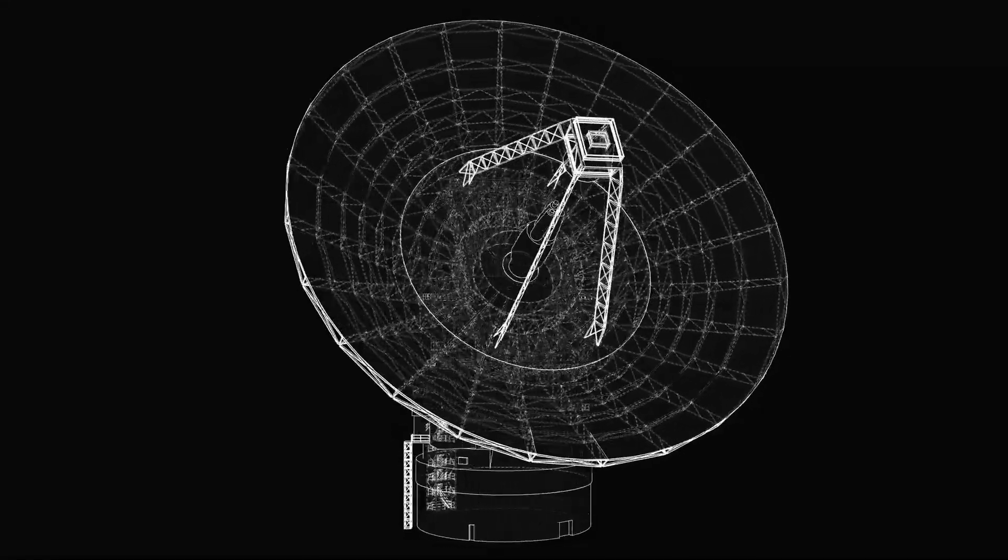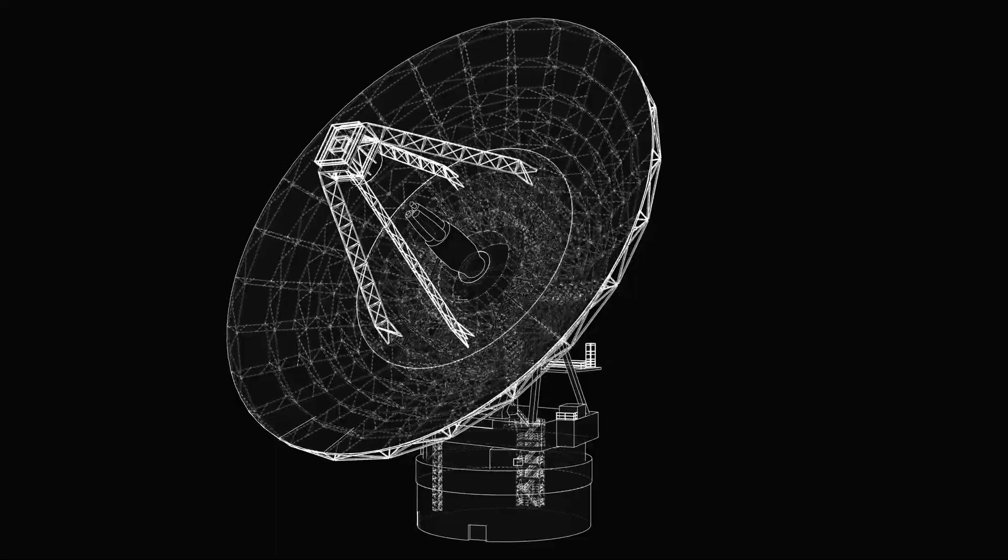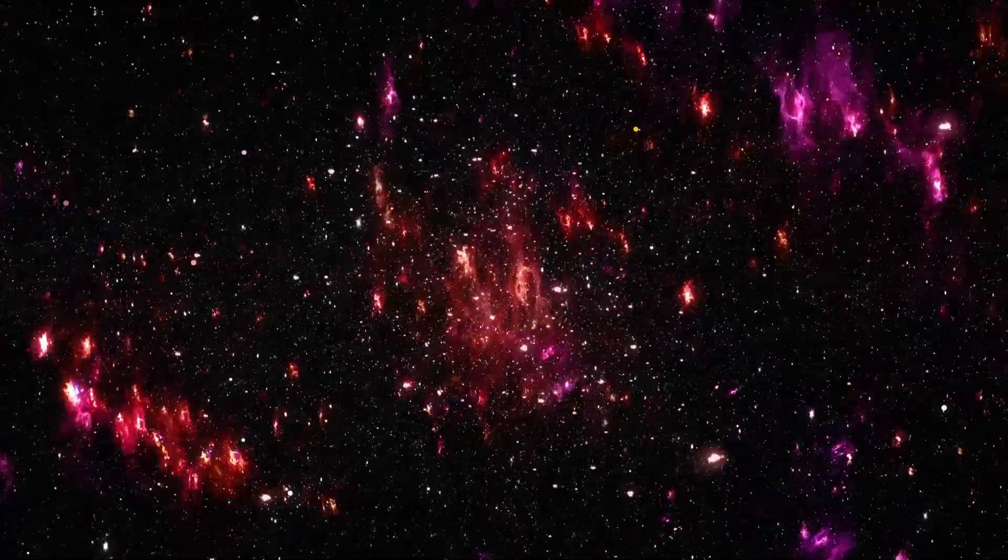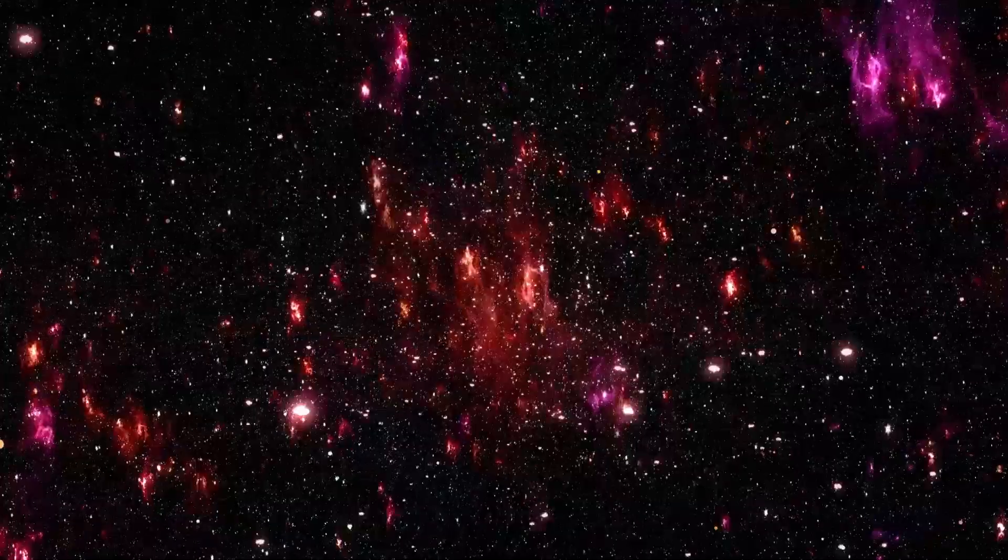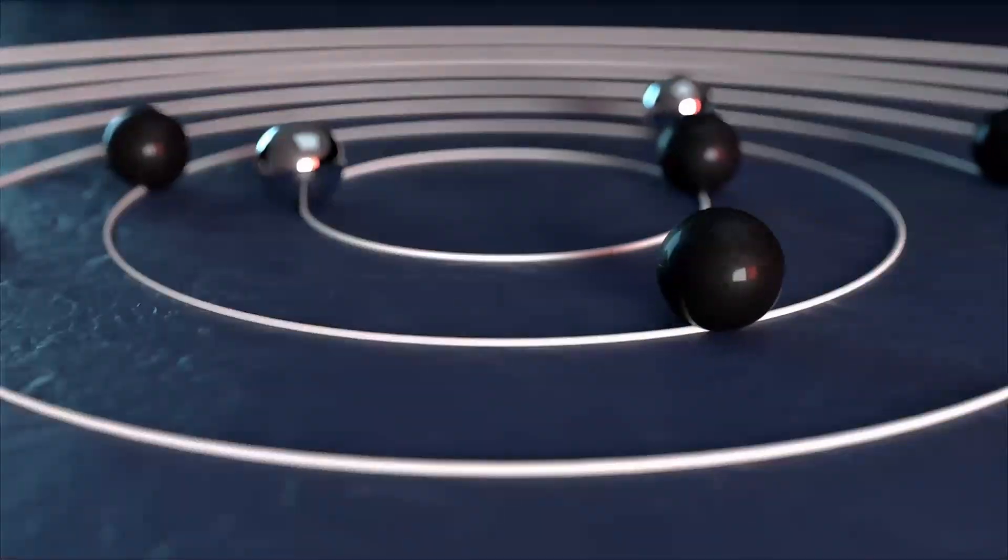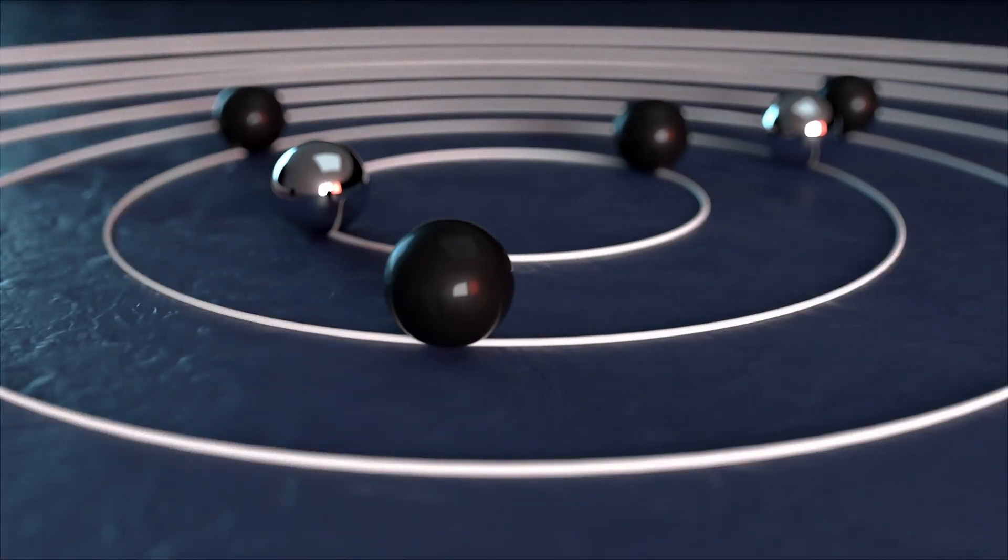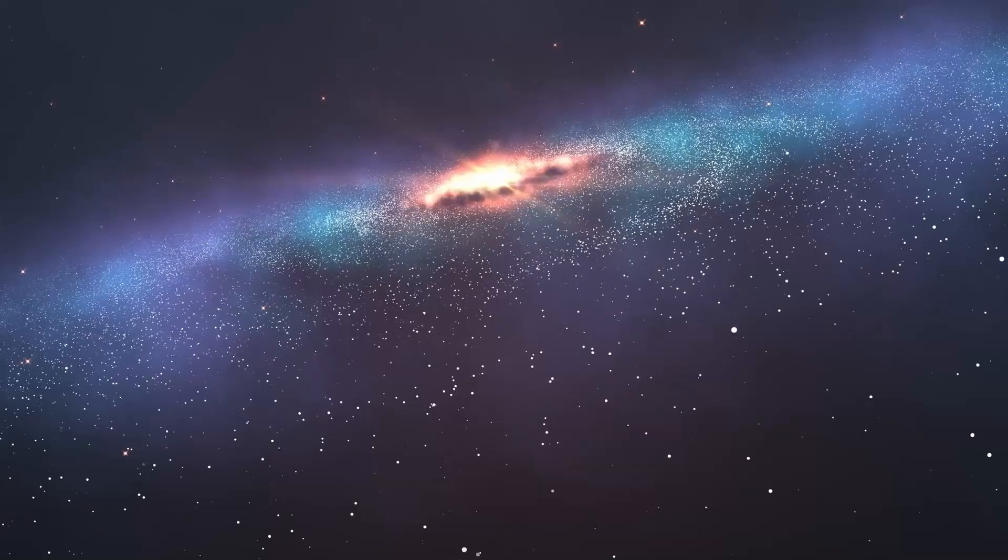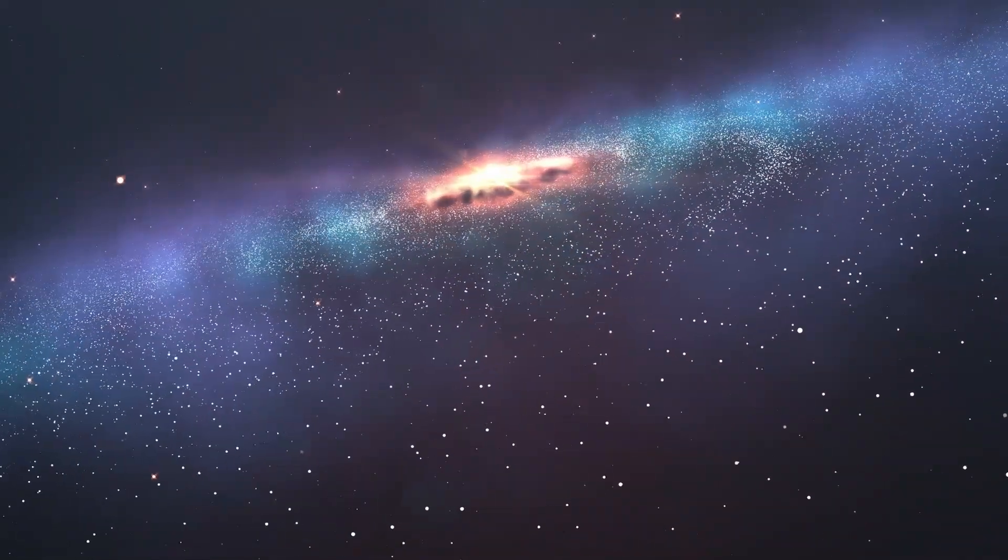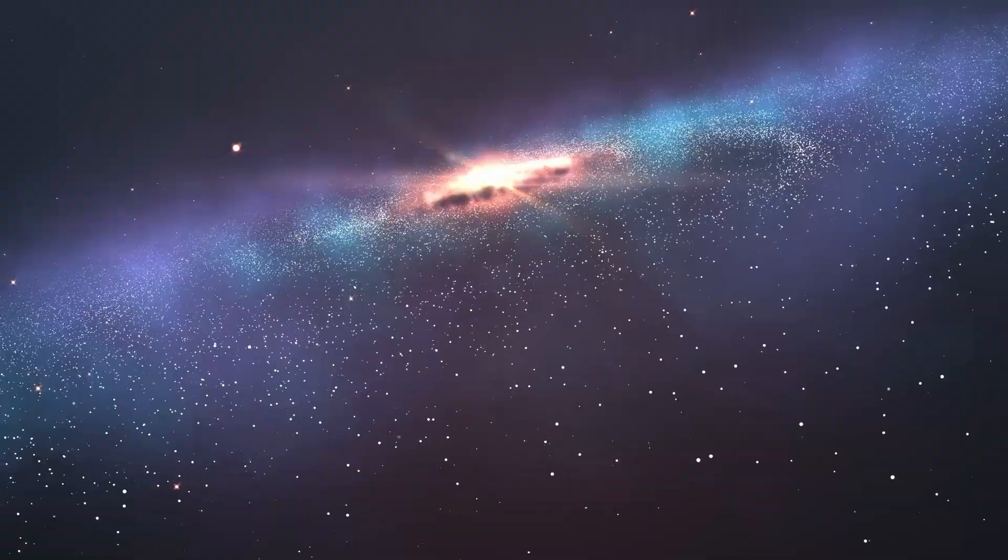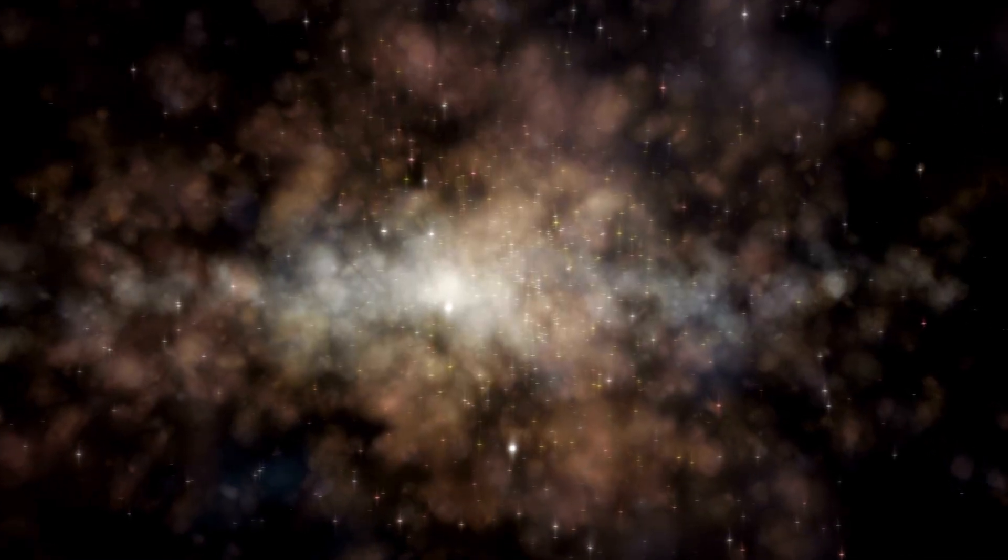Despite its dark, quiet appearance, 3I Atlas wasn't dead. In fact, it began to behave like a comet waking up, but in ways that defied expectations. Observations in August 2025 revealed something shocking. A plume of hydroxyl radicals, OH, a clear sign that water was sublimating from its surface. But the comet was still beyond five astronomical units from the sun, a region where ice should stay frozen solid. This wasn't supposed to happen.